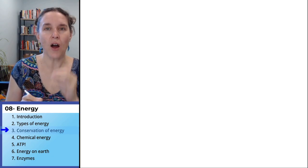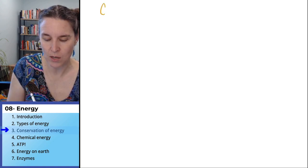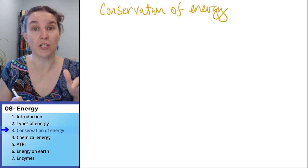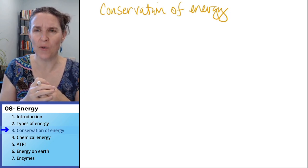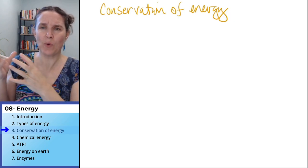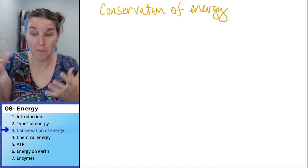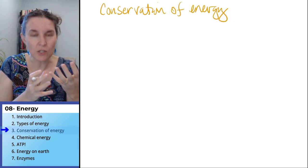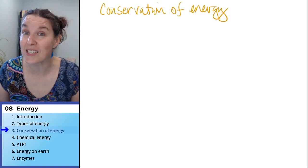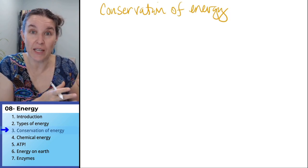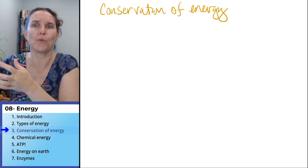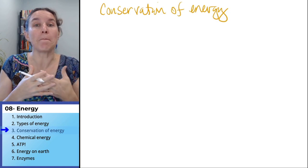Those energy transfers come with some rules. First of all, we have a law of conservation of energy. We talked about the conservation of matter — in chemical reactions, we have to balance a chemical equation because you can't end up with more matter than you started with, and you can't make matter disappear. It's like you took a pile of Legos that were battleships and rebuilt them into an alien spaceship using all the same Legos. The matter is conserved.